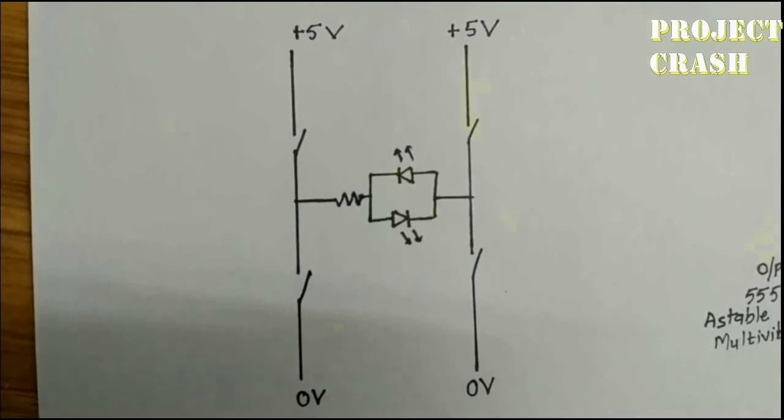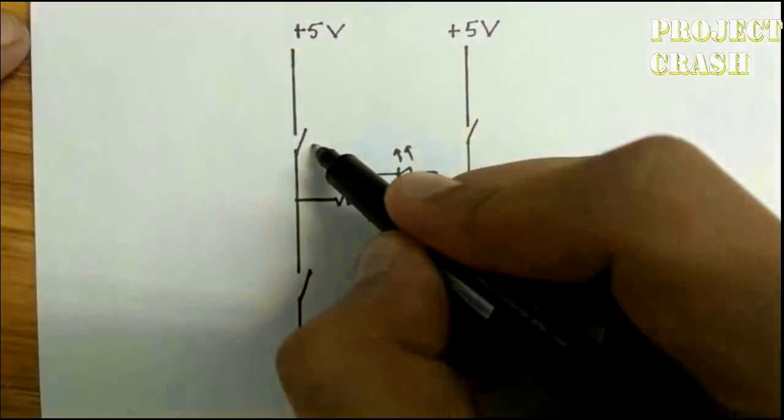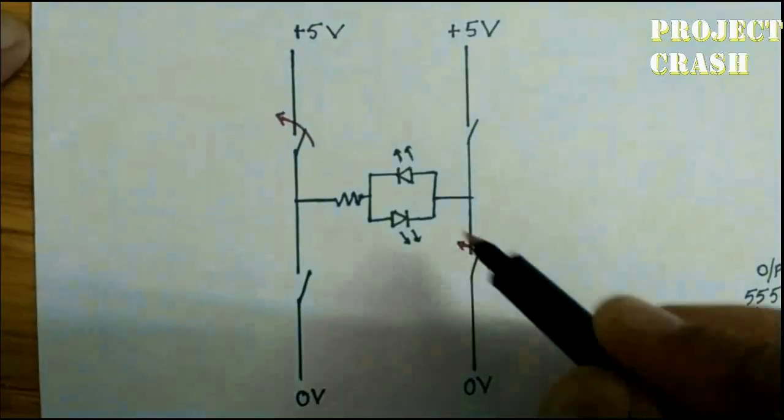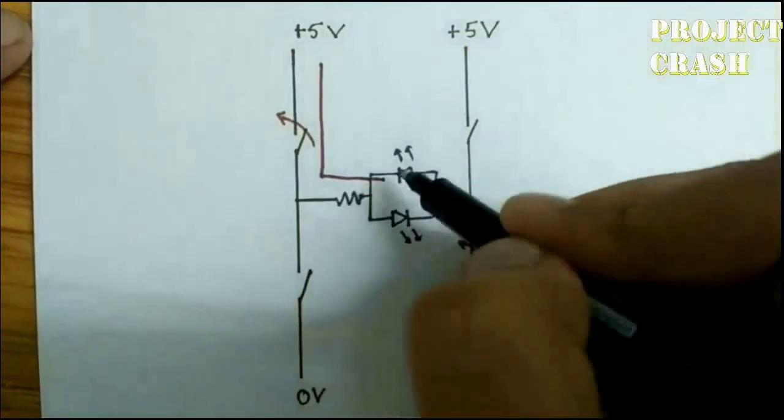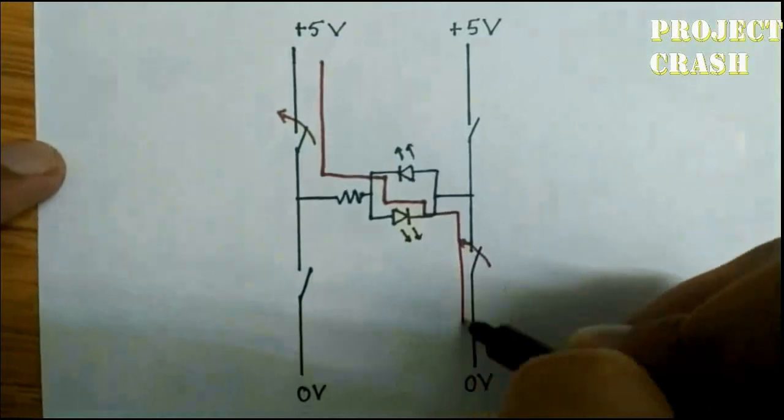The another way to generate AC signal is to use the H-bridge. In H-bridge there are four switches and two diagonal switches are closed at a time and responsible to flow the current.